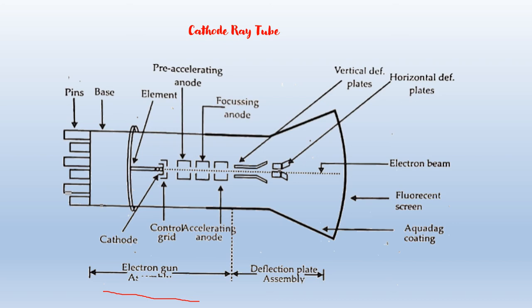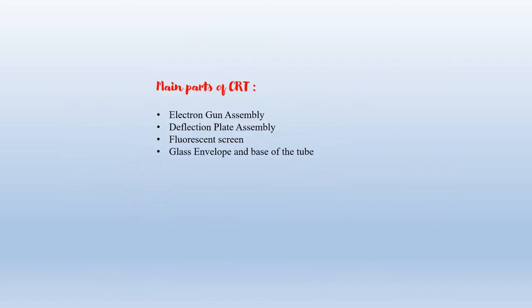The fourth assembly is the Glass Envelope and Base of the Tube. The envelope of the cathode ray tube is made of glass and is highly evacuated. The elements of the electron gun assembly are connected to pins on the CRT base. So this is all about the cathode ray tube. The main parts are: electron gun assembly, deflection plate assembly, fluorescent screen, and glass envelope and base of the tube.